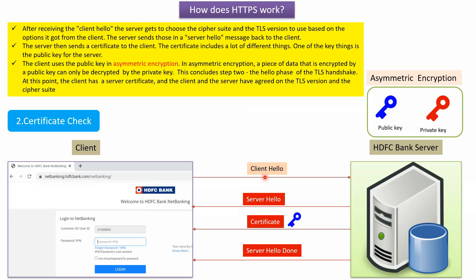After receiving the Client Hello message, the server chooses what TLS version and cipher suite to use based on the options it received from the client, and then sends a Server Hello message back to the client. The Server Hello message contains the chosen TLS version and cipher suite. After sending the Server Hello, the server also sends a certificate to the client.